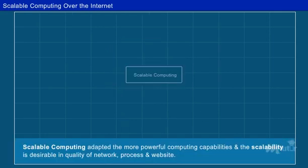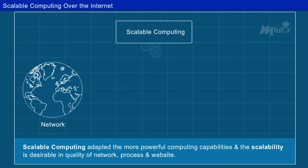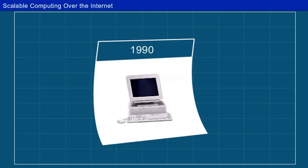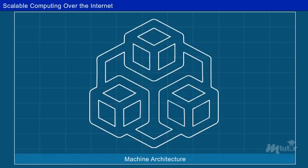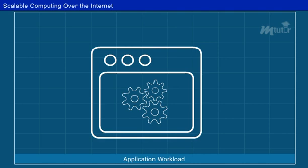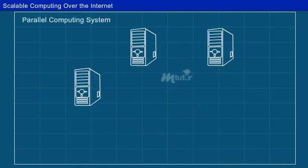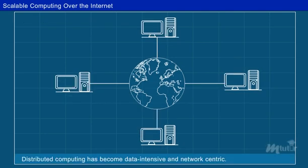Scalable Computing adapts more powerful computing capabilities, and scalability is also desirable in the quality of network, process and website. Computing technology has undergone a series of platform and environmental changes over the past 60 years, including evolutionary changes in machine architecture, operating system platform, network connectivity and application workload. One such evolution is replacing a centralized computer with multiple computers to solve large-scale problems over the Internet, making distributed computing data-intensive and network-centric.